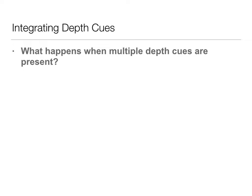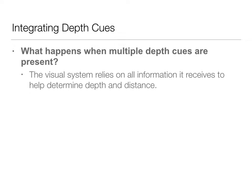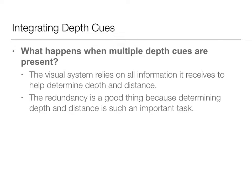So what happens when we have multiple depth cues present? There's some overlap between some of these depth cues, both the binocular cues and some of the monocular cues. The visual system really relies on all of this information to help determine depth and distance. So it's not one or the other, it's all of it together. And this redundancy is really a good thing because it's such an important task. The more information the visual system has to go on, the better decisions it can make.